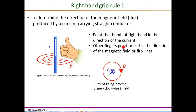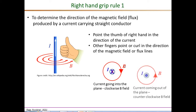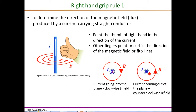Another way to determine the flux direction given the current direction is shown here. If the current enters the plane as indicated by a cross, then the magnetic field — given by the B field, flux density field, or flux lines — is clockwise as shown here. If the current enters the plane the field is clockwise, and vice versa: if the current is coming out of the plane as illustrated by a dot, then the corresponding magnetic field is in the counter-clockwise direction.